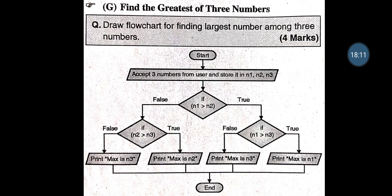Greatest of 3 Numbers — Accept numbers N1, N2 and N3 from user. If N1 > N2 is true, go to second decision: if N1 > N3 is true, then N1 is the largest; otherwise N3 is the largest. If N1 > N2 is false, go to second decision: if N2 > N3 is true, then N2 is the largest number; otherwise N3 is the largest number.